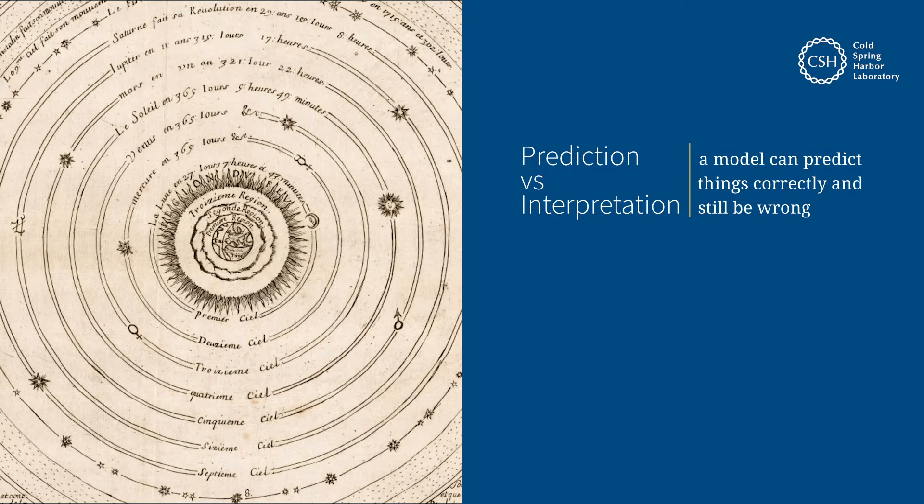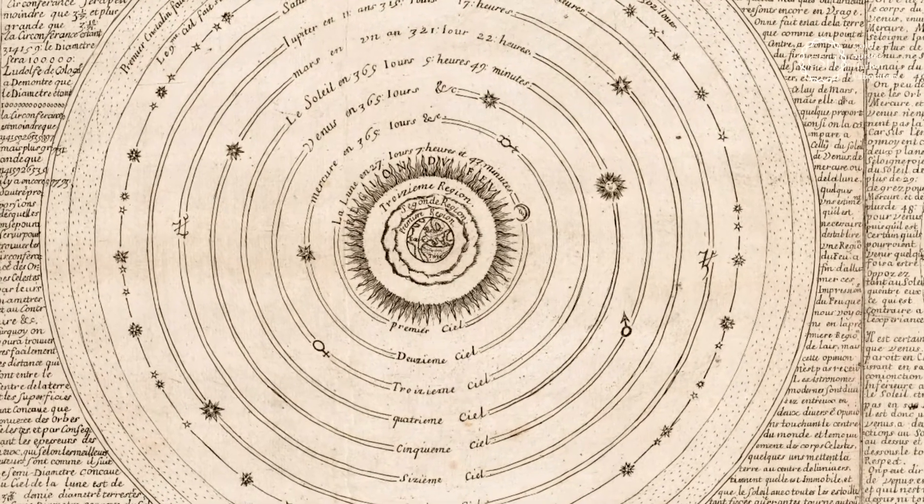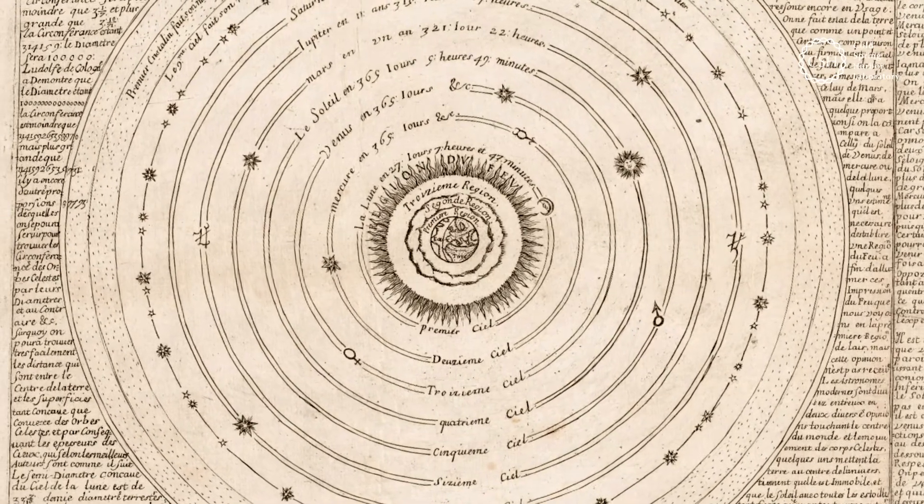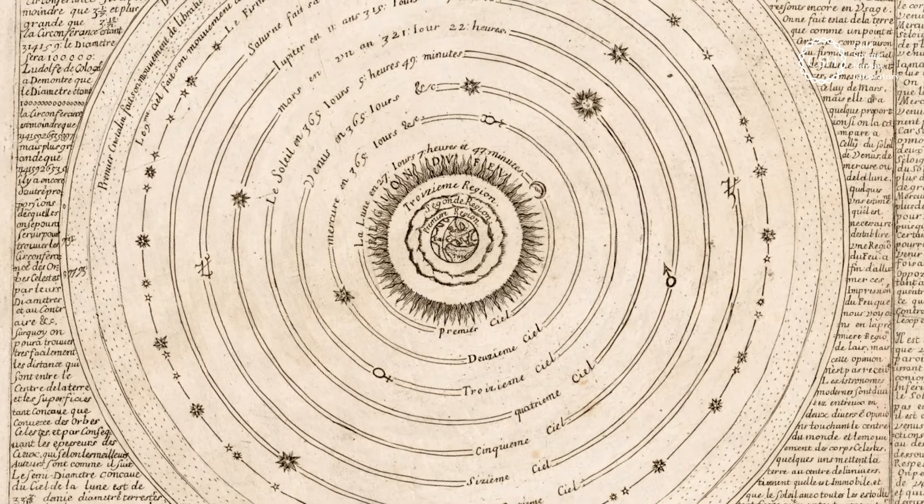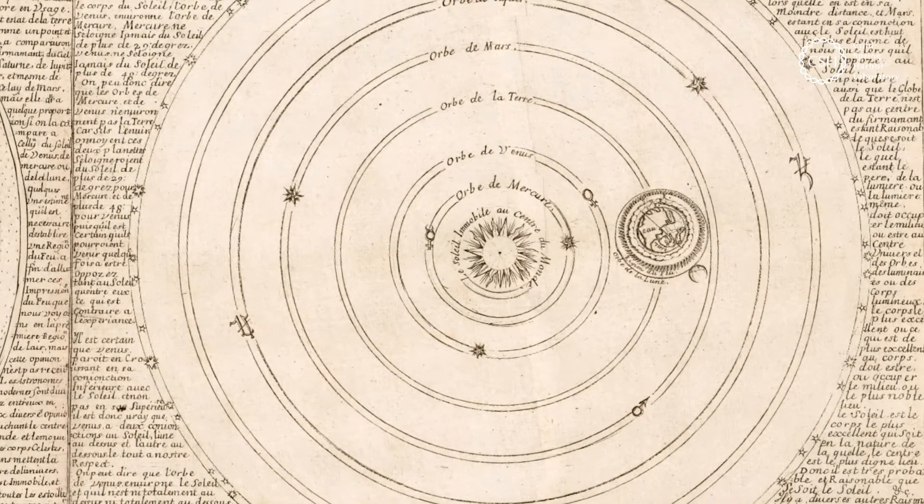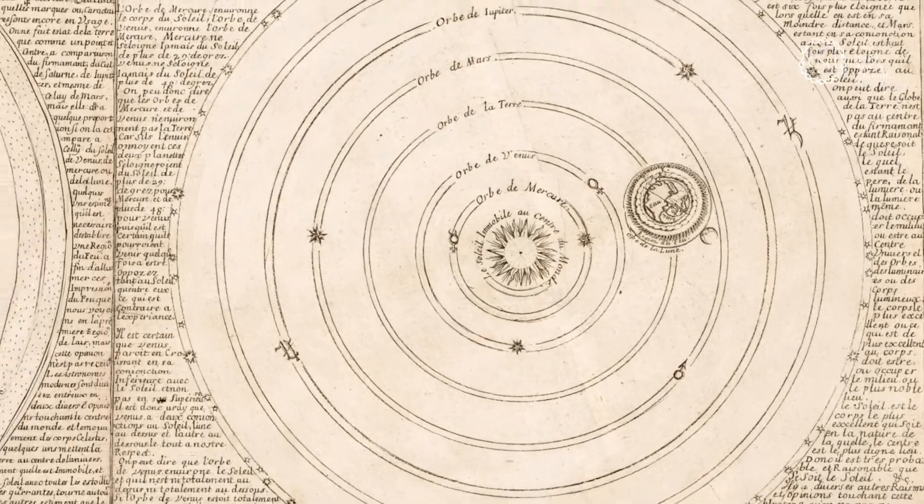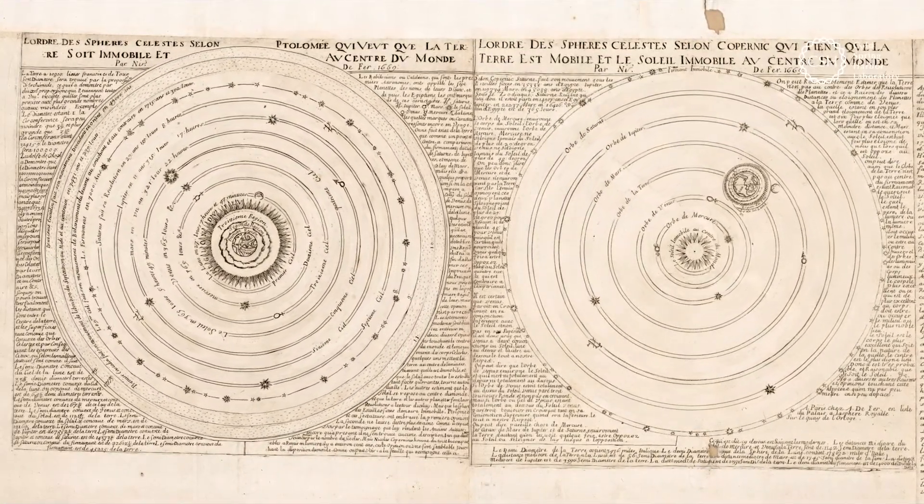Prediction and interpretation are not always the same. There was a very old model of the solar system, the Ptolemaic system, which put Earth in the center of the solar system. Later, Copernicus came with an alternative model which puts the Sun in the center of the solar system. But both of these models were so precisely fine-tuned.